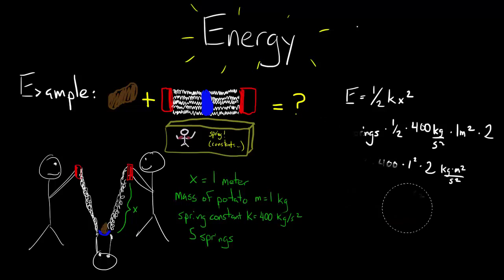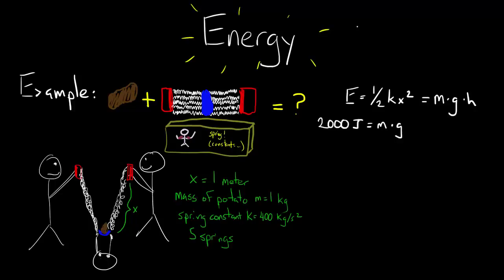So knowing that this energy is all going into gravitational potential energy, we know that 2,000 joules equals mgh. Working this out, we can say that 2,000 equals one kilogram times 9.8 meters per second squared times h, or the height that we want to know. And this is about 204 meters.